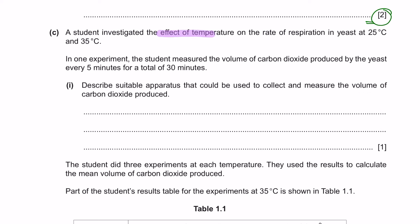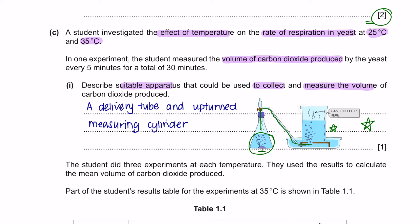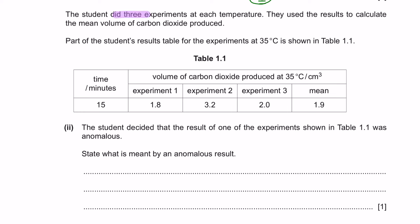Question C: A student investigated the effect of temperature on the rate of respiration in yeast at 25°C and 35°C. The student measured the volume of carbon dioxide produced every 5 minutes for 30 minutes. Part 1: Describe a suitable apparatus to collect and measure the volume of CO₂ produced. The yeast respiration happens in one tube and CO₂ is sent through a delivery tube into a measuring cylinder — so the apparatus would be a delivery tube and an upturned measuring cylinder.